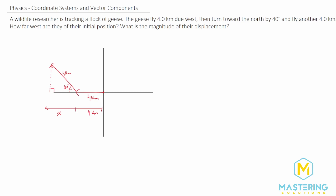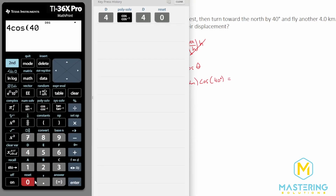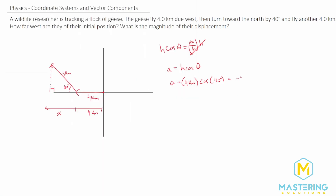We need to find the side adjacent to the angle, and we have the hypotenuse, so we'll use cosine — or CAH from SOHCAHTOA. Cosine of theta equals adjacent over hypotenuse. Solving for adjacent: adjacent equals hypotenuse times cosine of theta, which is 4 kilometers times cosine of 40°. That gives us 3.1 kilometers. Since we're going in the negative x-direction, that's −3.1 km. Adding to the original 4 km, the total westward distance is 7.1 kilometers.